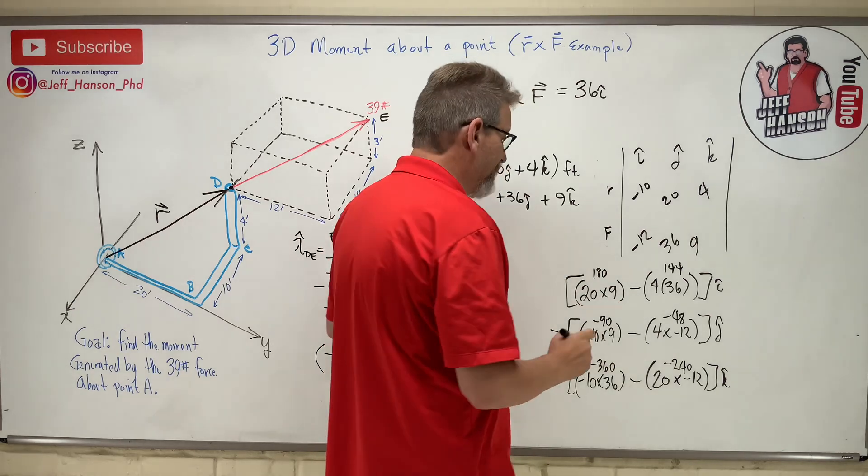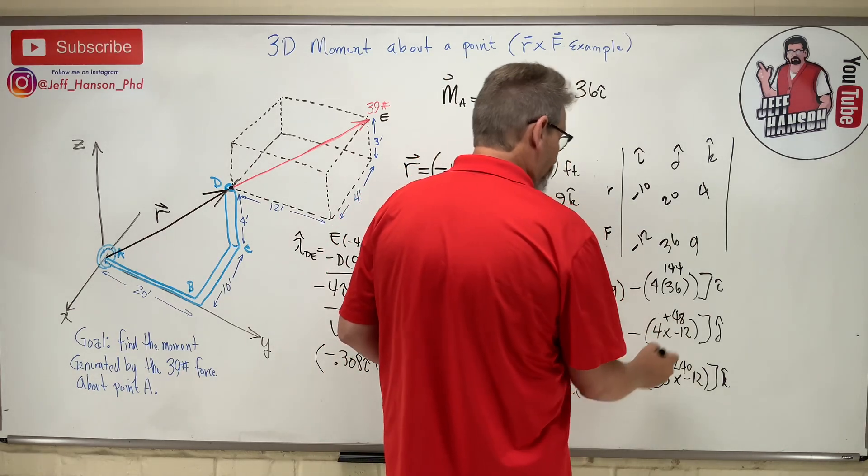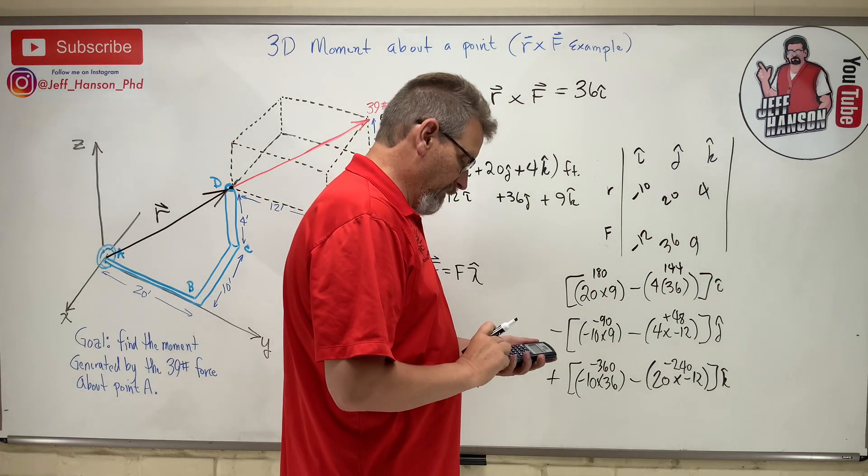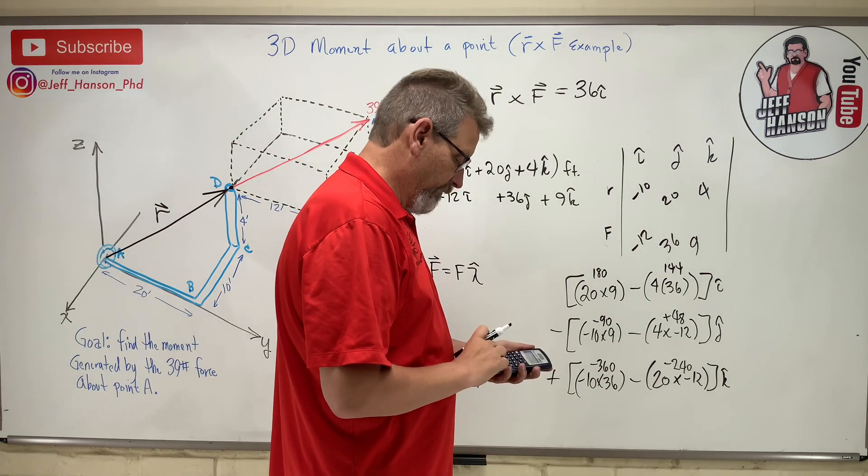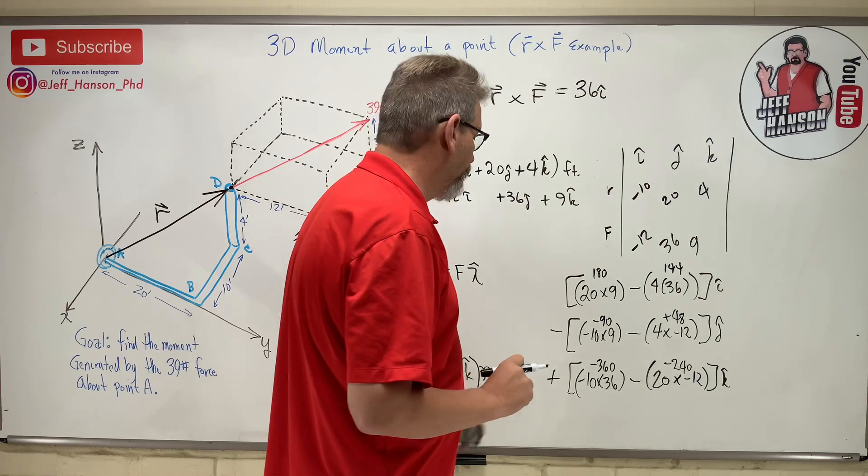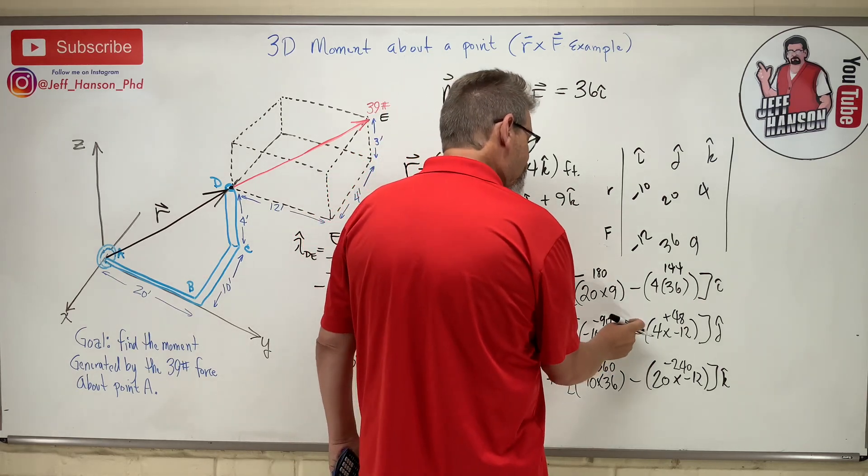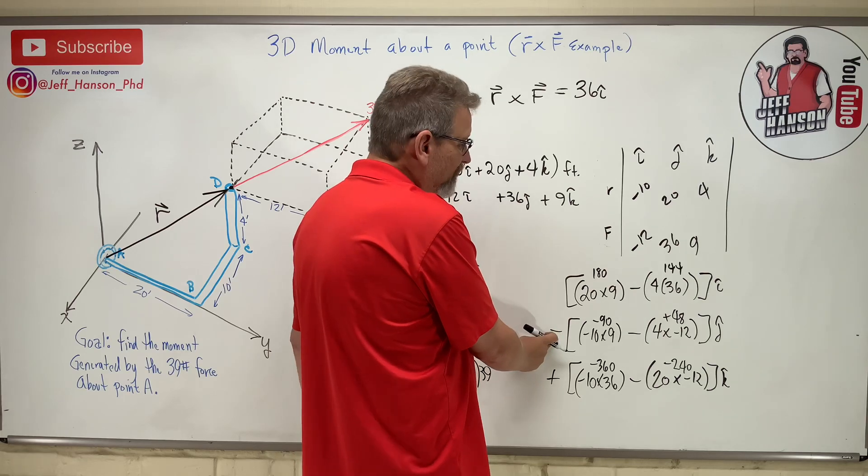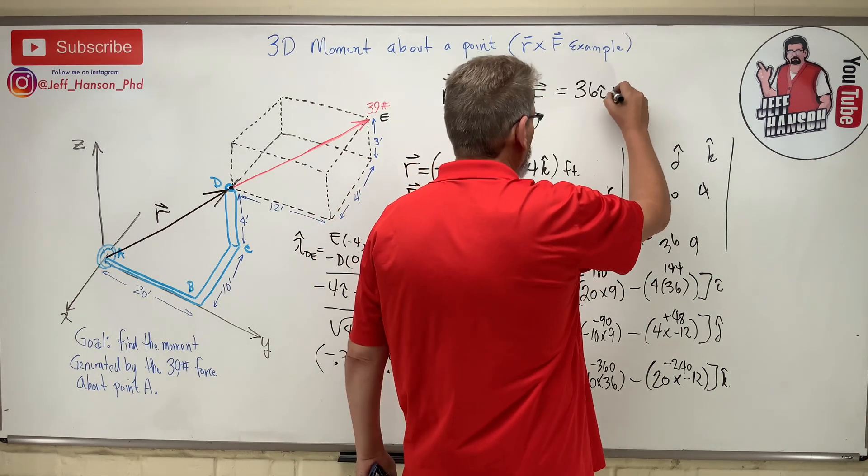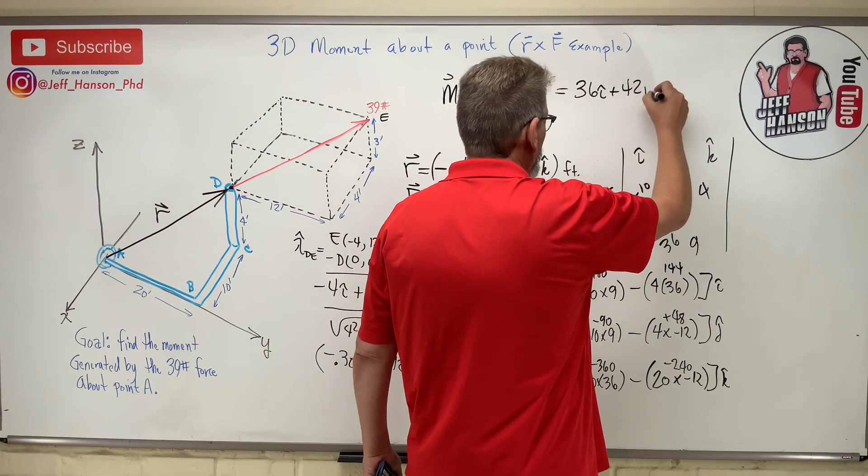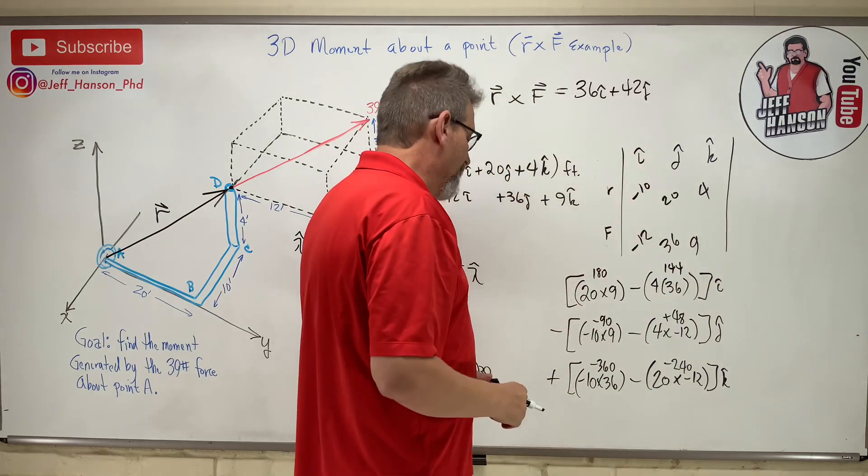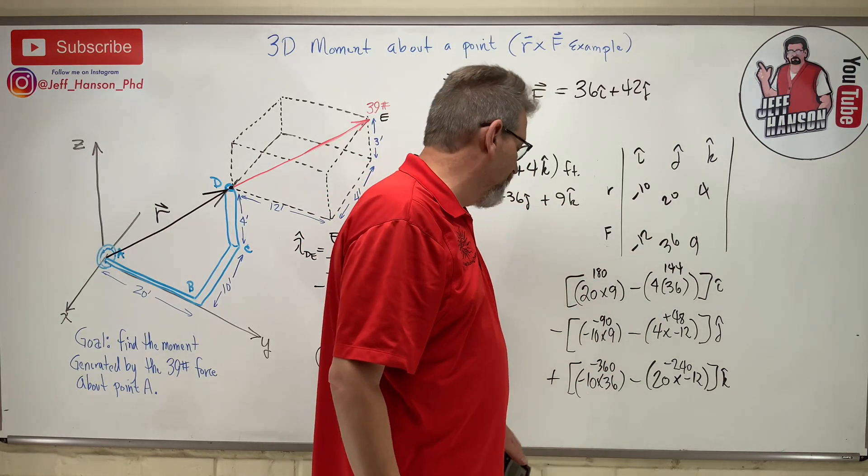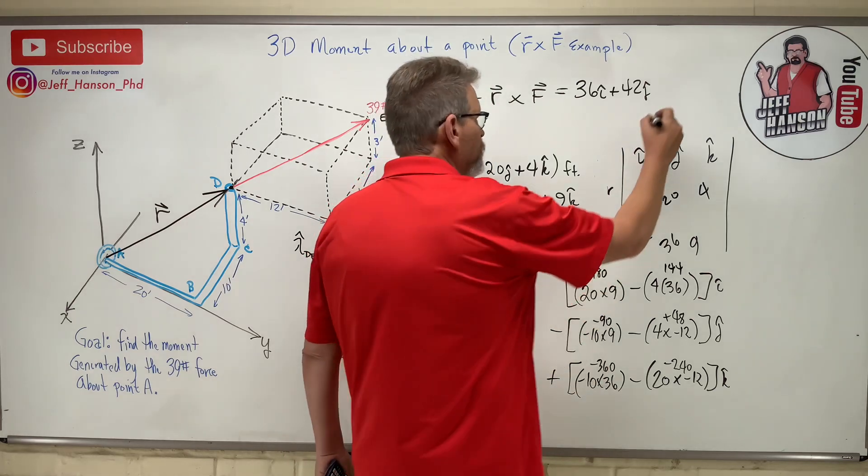And then what is this? Negative 90 minus a minus 48, which is basically negative 90 plus 48. Negative 90 plus 48 is 42 to the negative. This gives you negative 42, but then there's a negative out here which turns it back to a positive 42. And then finally, negative 360 minus a negative 240 leaves you with negative 120.